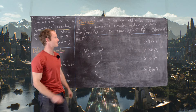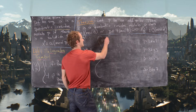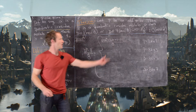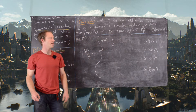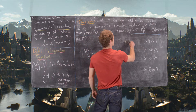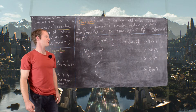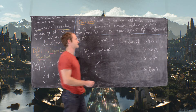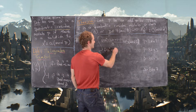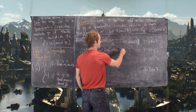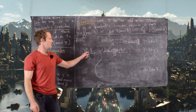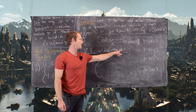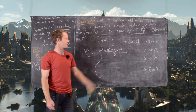For p = 8k+1: (8k+1)² = 64k² + 16k + 1, so (p²−1)/8 = (64k² + 16k)/8 = 8k² + 2k, which is clearly ≡ 0 (mod 2). For p = 8k+3: (8k+3)² = 64k² + 48k + 9, so (p²−1)/8 = (64k² + 48k + 8)/8 = 8k² + 6k + 1 ≡ 1 (mod 2).